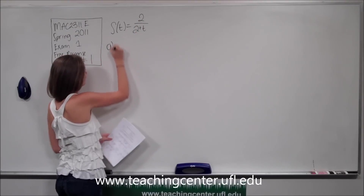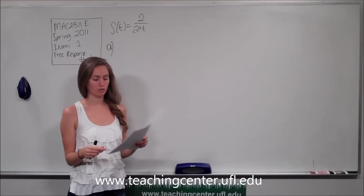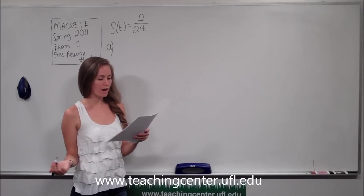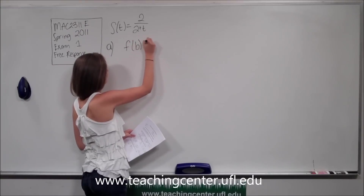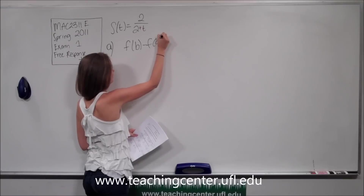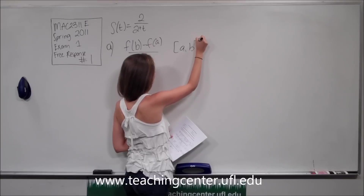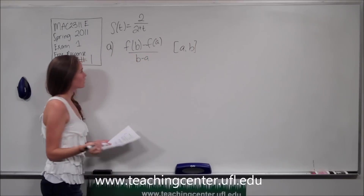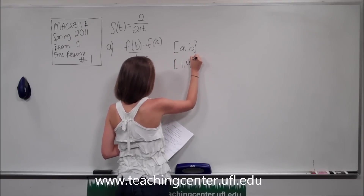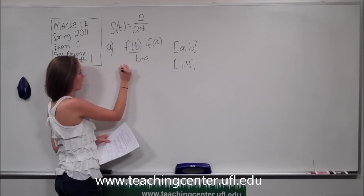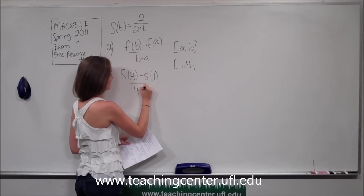Part a asks us what is the average velocity of the object on the interval 1 to 4, and include units. Whenever we are asked for average velocity on an interval we can use our formula: f of b minus f of a all over b minus a on the interval a to b. In our case our function is s of t and our interval is 1 to 4, so we are going to do s of 4 minus s of 1 all over 4 minus 1.